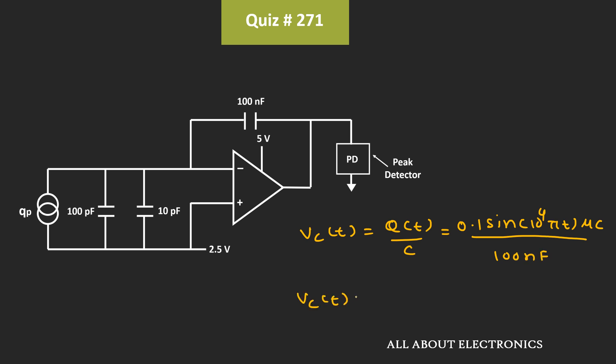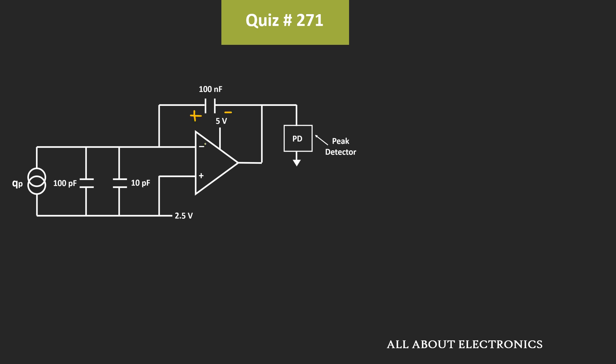That means Vc is equal to 10 to the power minus 7 times sin 10 to the power 4 times πt divided by 10 to the power minus 7. That means the voltage across this capacitor, that is Vc, is equal to sin 10 to the power 4 times πt. So we can say that the output voltage Vout is equal to 2.5V minus sin 10 to the power 4 times πt.